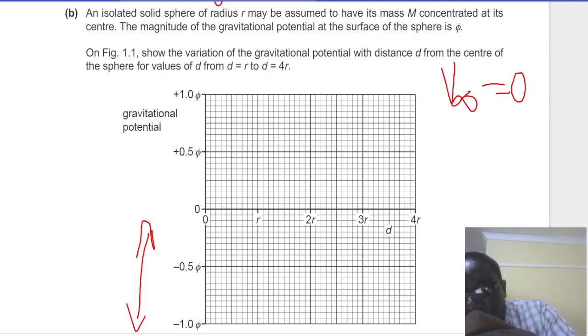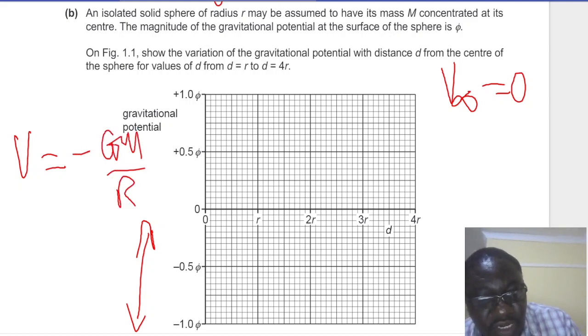Now the formula for potential is minus G big M over R. Now in this case, we are given the symbol small r, so you have to be careful there. We need to change that to small r.